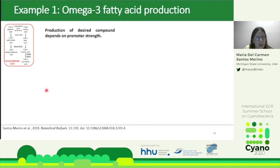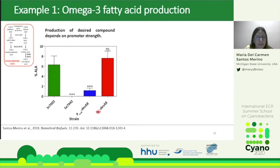In this work, the authors modified PCC 7942 to produce alpha-linolenic acid. Since 7942 only contains DesC, they introduced DesA and DesD from PCC 7002. The production depended on the promoter strength: using PnrsB — inducible by nickel — gave very low levels of alpha-linolenic acid, while using PTRC — inducible by IPTG — gave higher levels comparable to the native PCC 7002 species. The promoter activity was characterized using a LuxAB reporter measuring luminescence over time; PTRC produced around 25,000 relative luminescence units compared to ~3,000 for PnrsB, explaining the higher alpha-linolenic acid yield.